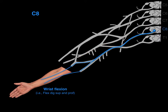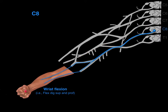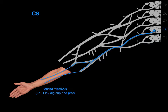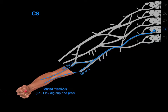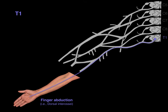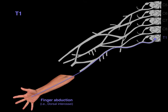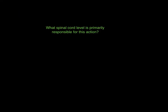The C8 myotome is wrist and finger flexion — from here to here — and the median and ulnar nerves transport motor neurons to the flexor digitorum superficialis and profundus muscles. For T1, finger abduction is controlled by the dorsal interossei, and the ulnar nerve transports those motor neurons.